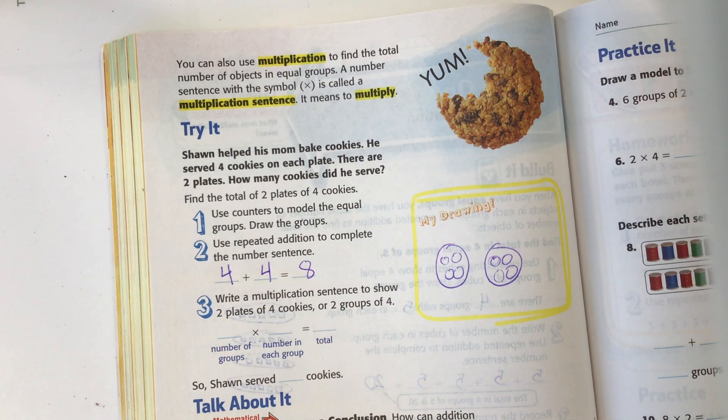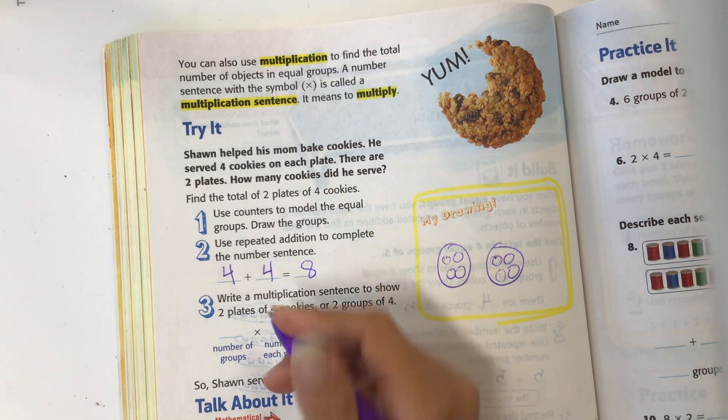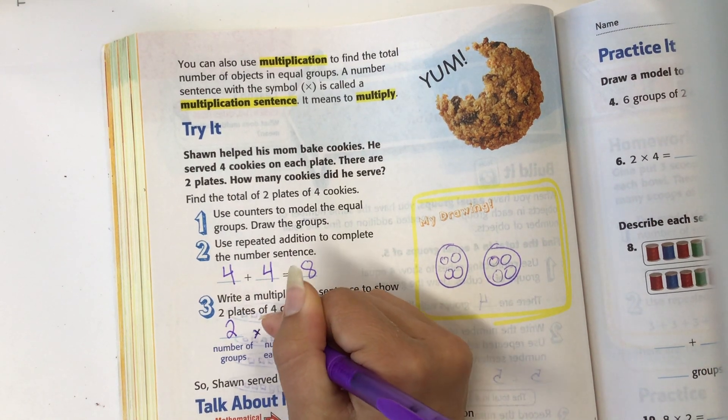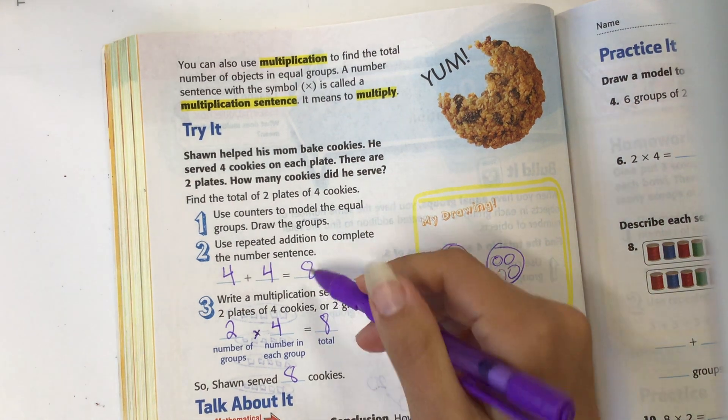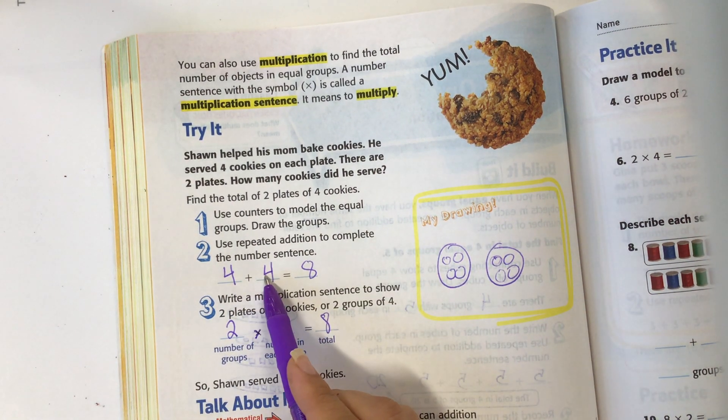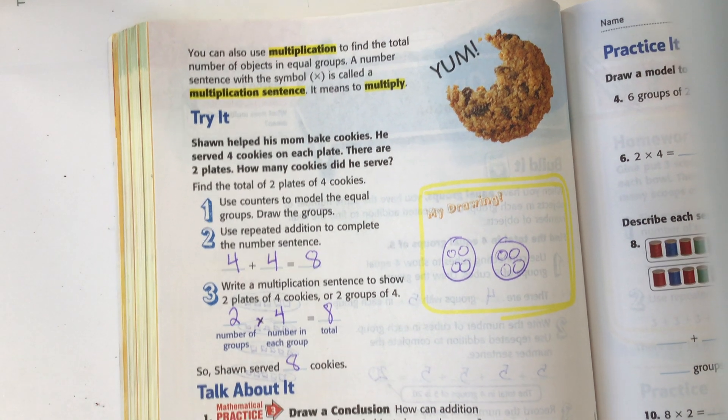Write a multiplication sentence to show two plates of cookies or two groups of four. So two groups of four equals eight. Sean served eight cookies. So there are two different ways we could solve this: repeated addition or multiplication, which we're going to learn. Multiplication is a bit quicker.